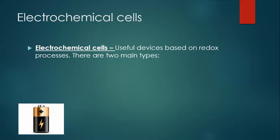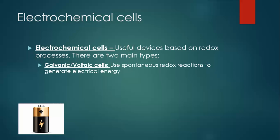In this part of the unit, we're going to be talking about electrochemical cells. Electrochemical cells are useful devices that are based on redox processes, and there are two main types. There are galvanic or voltaic cells — they're the same thing. These use redox reactions that are spontaneous, that happen on their own without constant energy input. These things generate electrical energy like a battery. A battery is a type of, or made up of, voltaic cells.